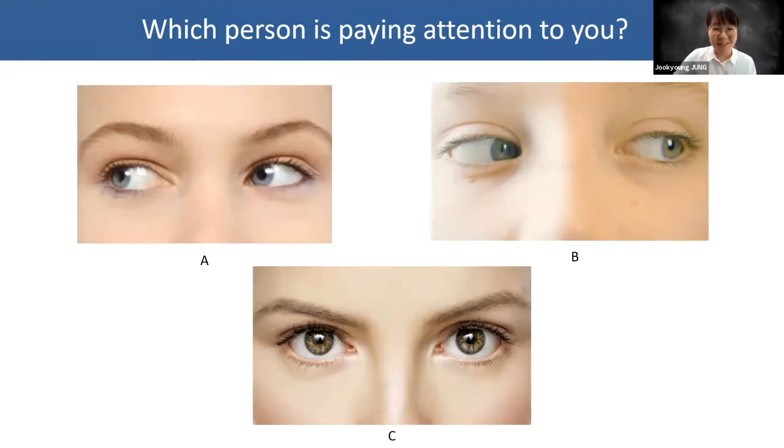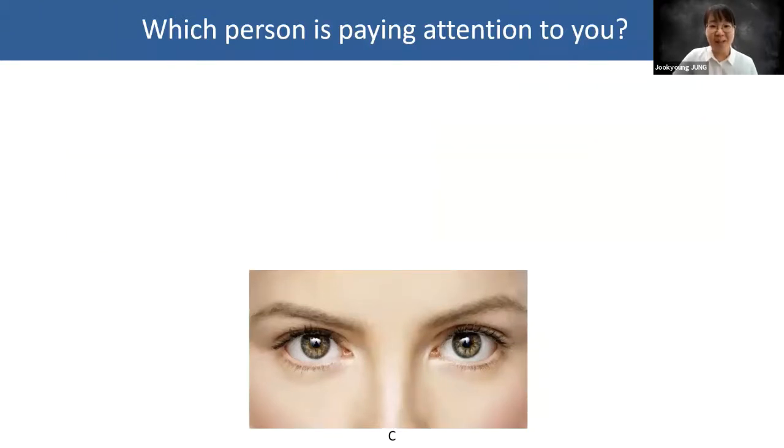Obviously C, right? That's right. I think we all agree that we may want to have a conversation with C, not A or B. Why is that?